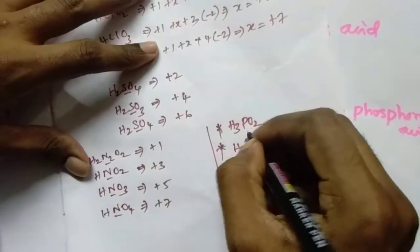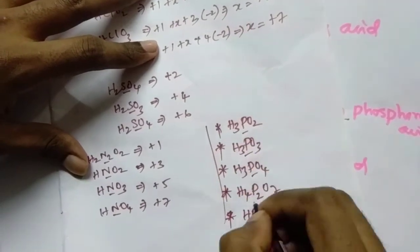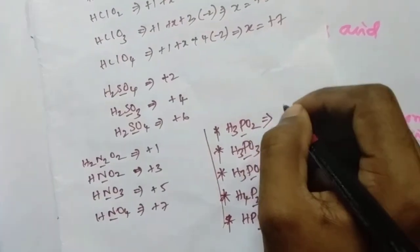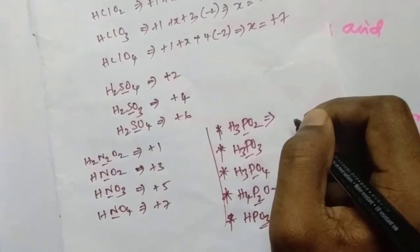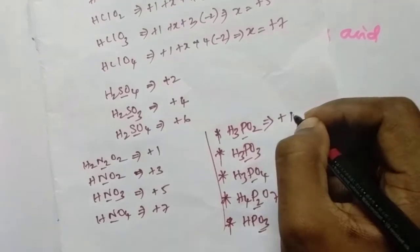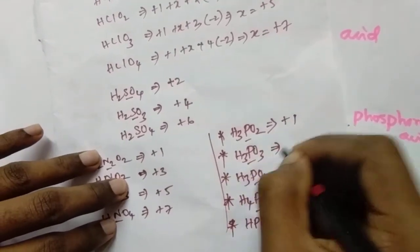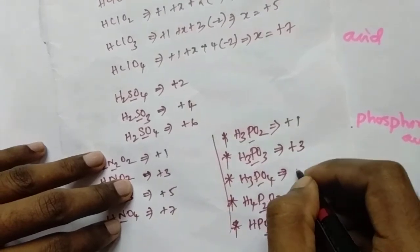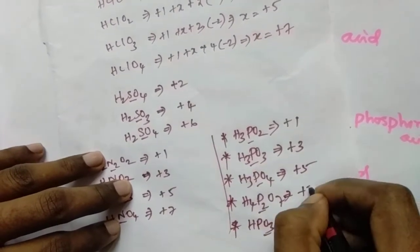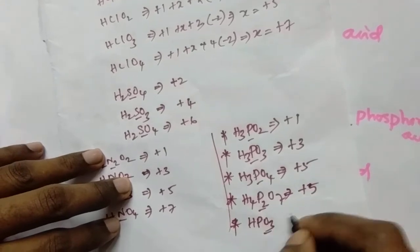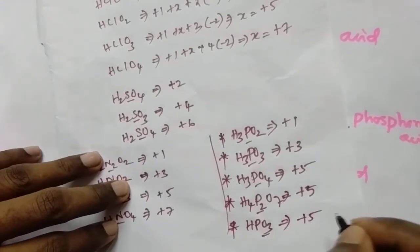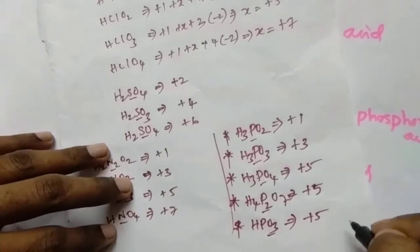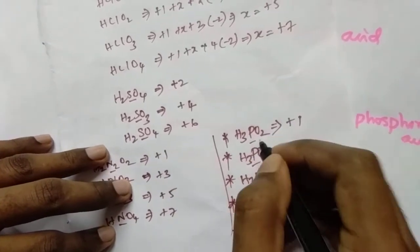If you calculate for phosphorus oxy acids, the oxidation state of the central phosphorus atom is: +1 for the first acid, then +3, then +5, then +5 here, and +5 here as well. You can do the calculation and find the oxidation state of the central atom.